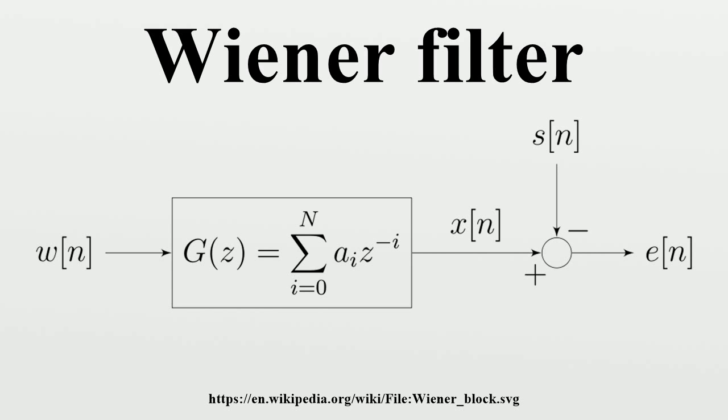Wiener filter solutions: The Wiener filter problem has solutions for three possible cases. One where a non-causal filter is acceptable, the case where a causal filter is desired, and the finite impulse response case where a finite amount of past data is used. The first case is simple to solve but is not suited for real-time applications.